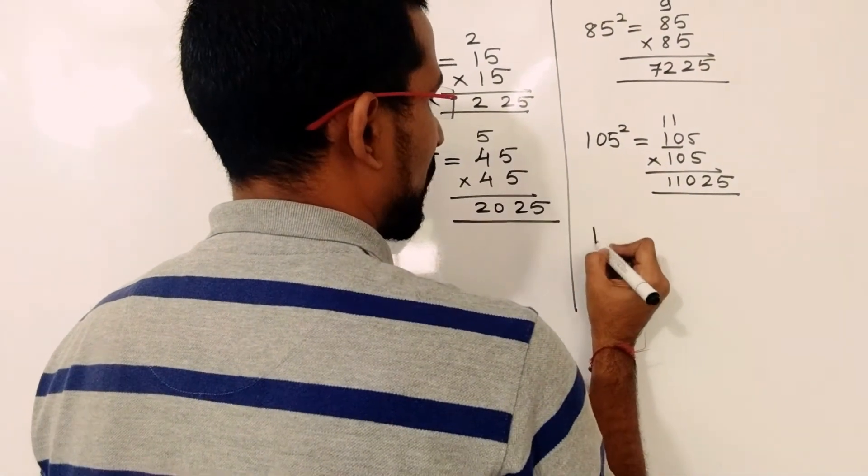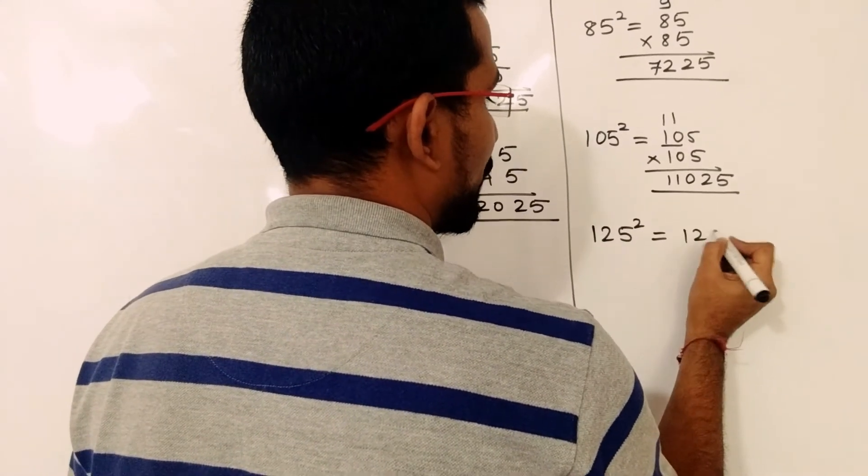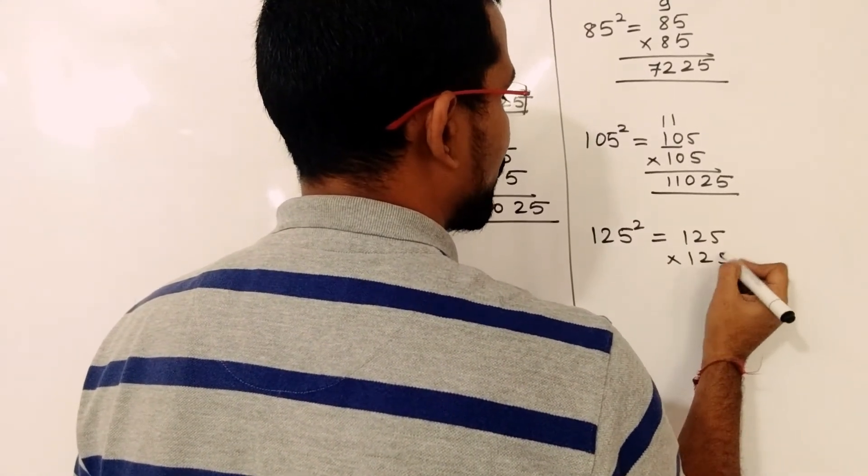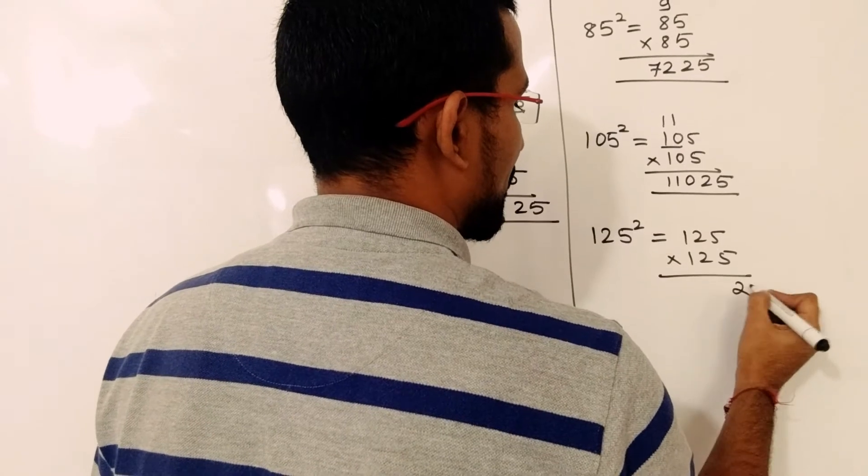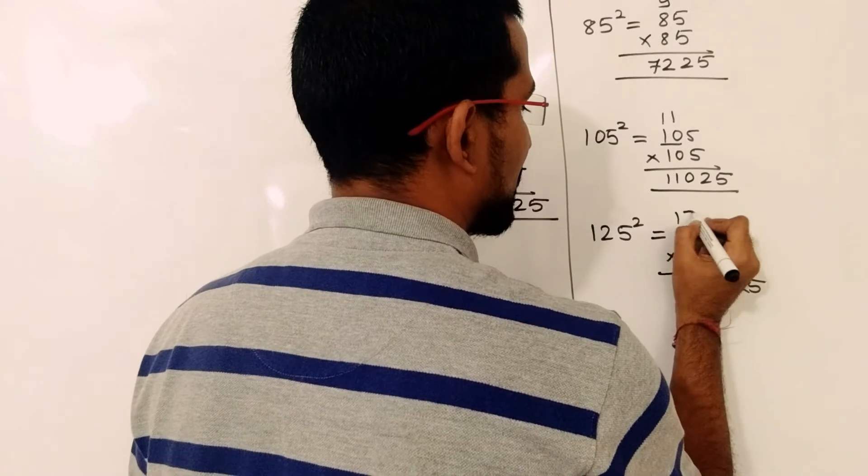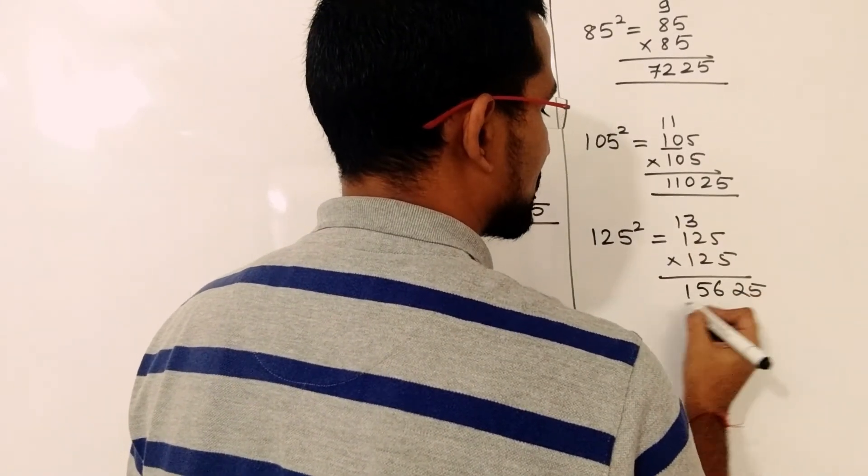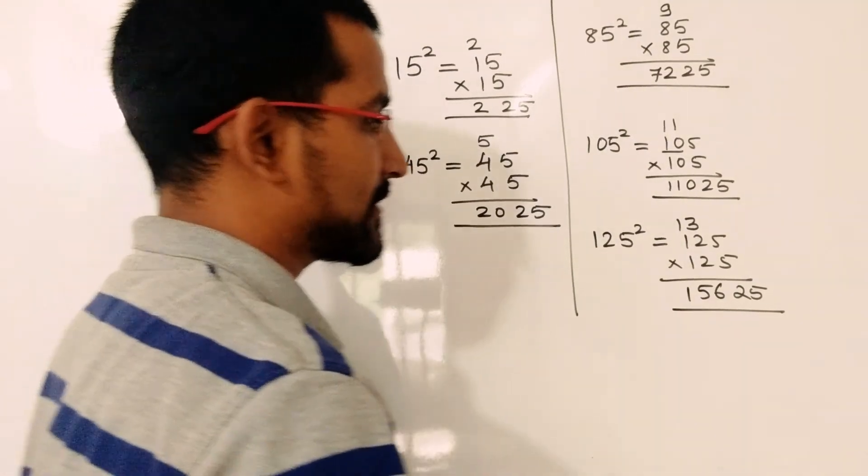I will take one more example: 125. So 5 into 5 is 25. Increase this 12 by 1, so it will become 13. 13 into 12 is 156. So it will be 15625.